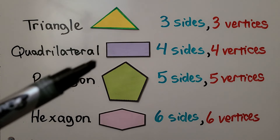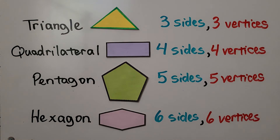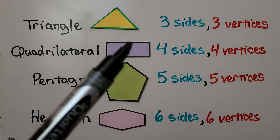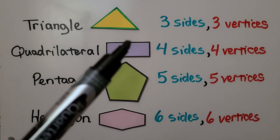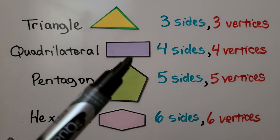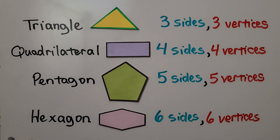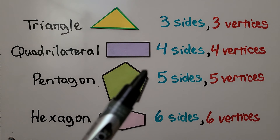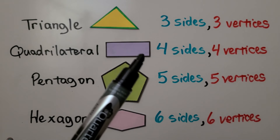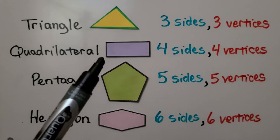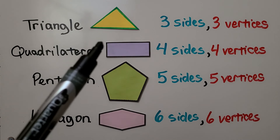This is a quadrilateral. It has four sides — one, two, three, four. And it has four vertices — one, two, three, four.